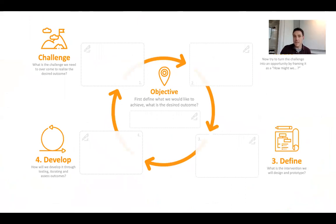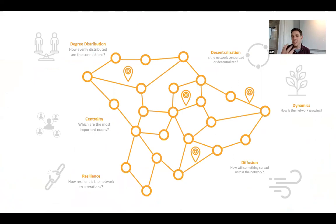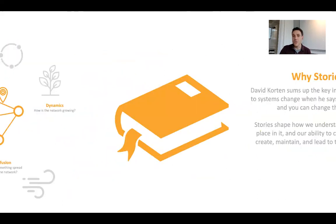We also look at the structure of the system — the network of connections within that system — as another way of influencing and changing it. So we can design intervention points at the elements in the system, but we can also think about the systemic structure here, the network, and how we might best understand that and then find those places to intervene and alter the flows of information, the connection of ideas, and so forth.